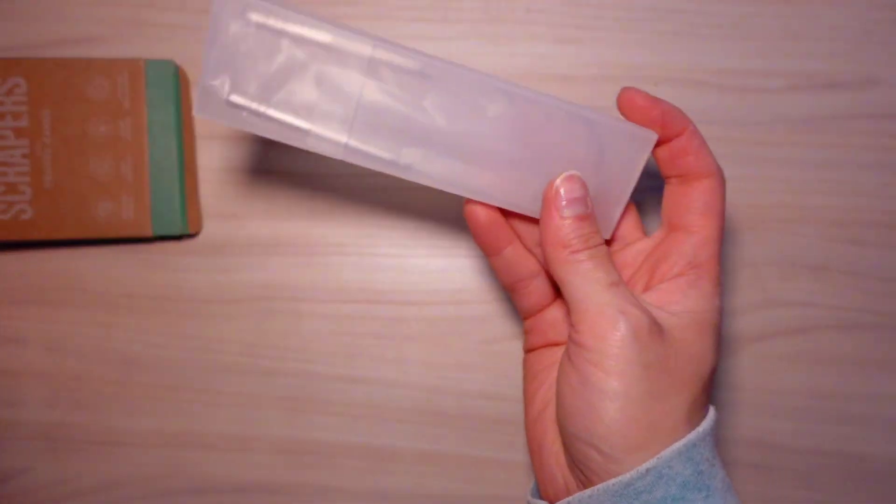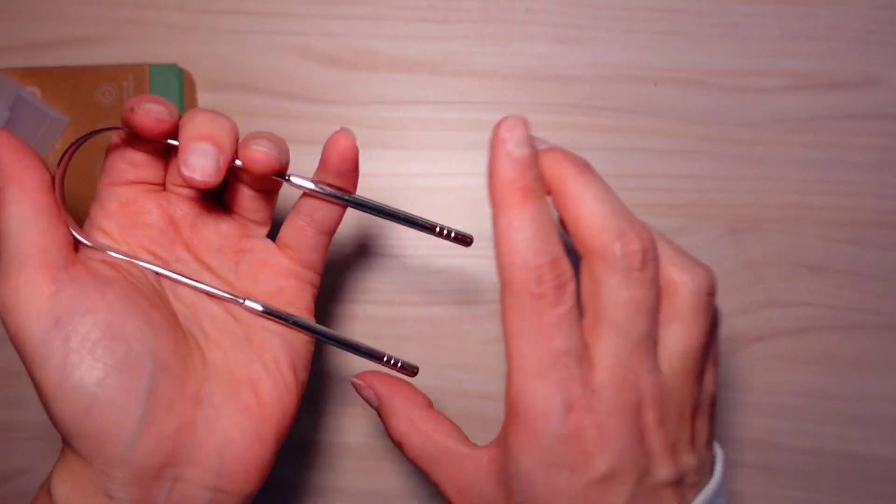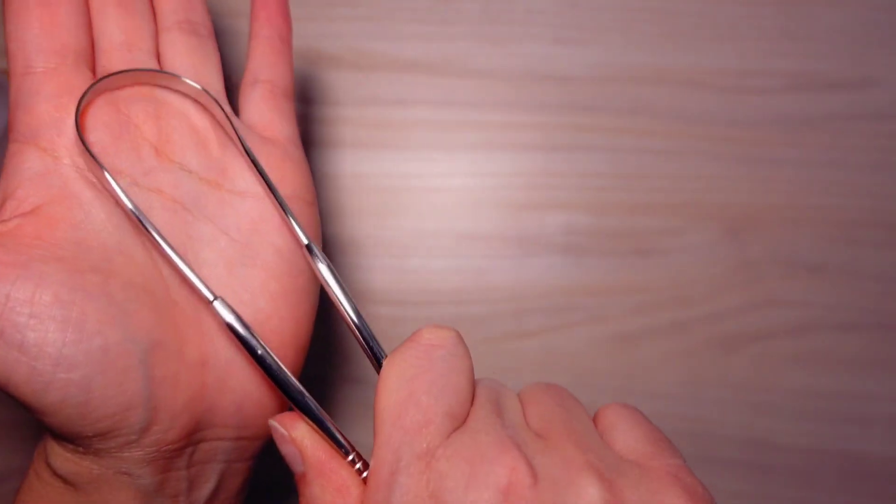It comes in a nice case. These are the stainless steel tongue scrapers. So this is the part that you're going to hold on to. This is the part that's going to go behind your tongue in the back.